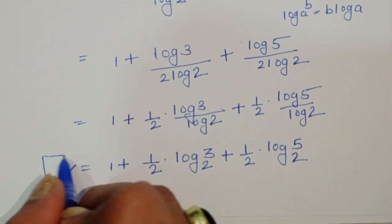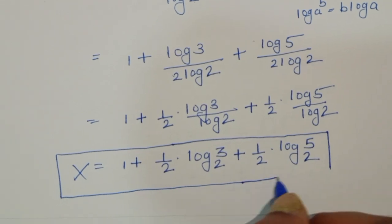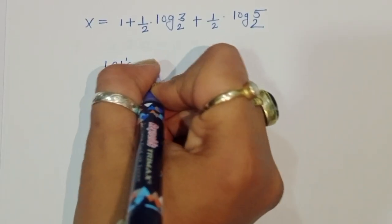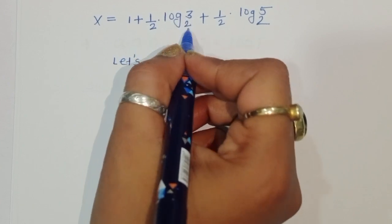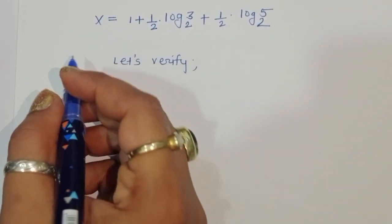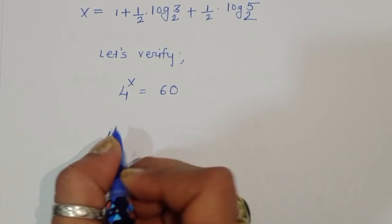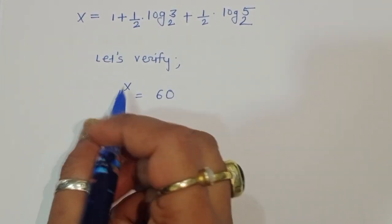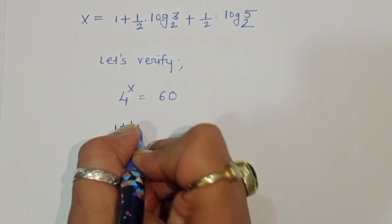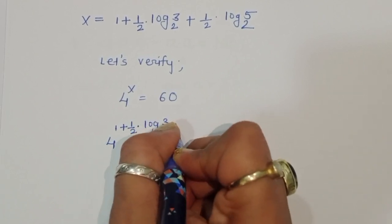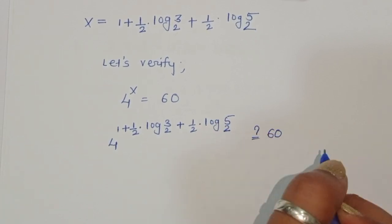Now let's verify whether this value of x is correct. The value is x equals 1 plus one-half log of 3 to the base 2, plus one-half log of 5 to the base 2. We check: 4 power x should equal 60.